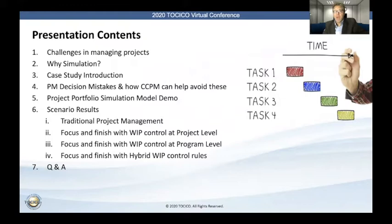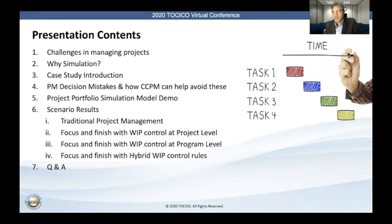The agenda for today: I will start off with the challenges that we face as managers in a project environment, why we decided to use simulation and how it helps to overcome those challenges. I'll present the introduction for this case study for the gas turbine manufacturer, then cover what decision mistakes we can make in managing projects — avoidable and consequential decision mistakes — and how critical chain project management rules can help to avoid these. I will then hand over to Jacobin, who will do a demonstration of the project portfolio simulation model. After the demo, he will hand back to me and I will share some really exciting results. Then we will open it up to Q&A.